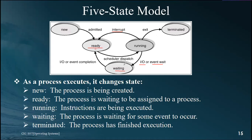A common mistake is drawing an arrow from waiting directly to running. That is incorrect. When IO completes or an event occurs, the process first goes back to the ready state and stands in the ready queue along with all other processes. Finally, the terminated state is reached when a process finishes or is terminated.